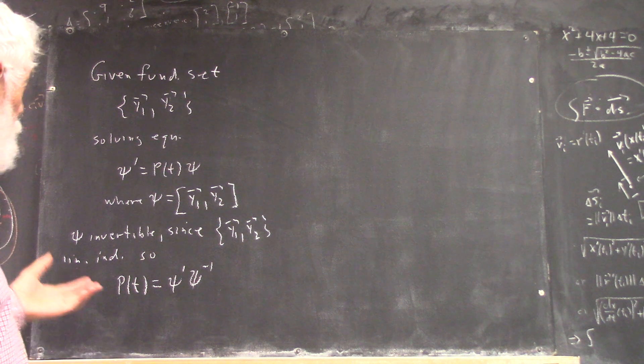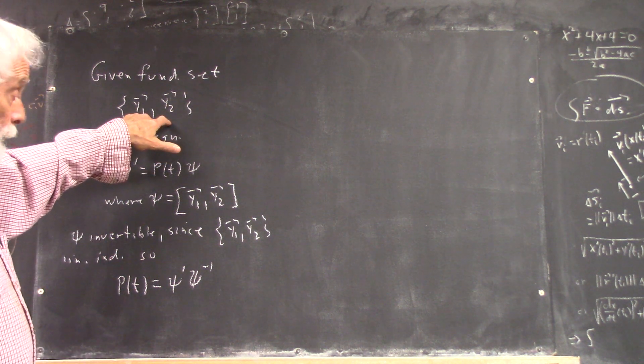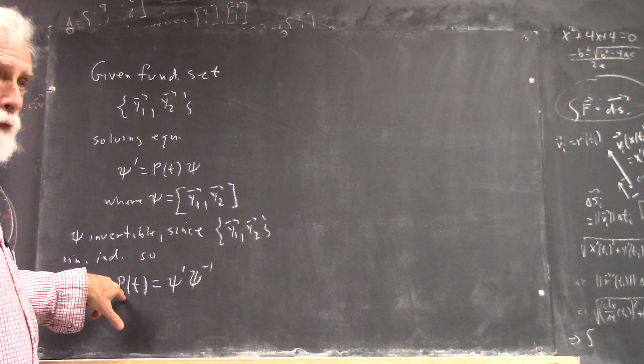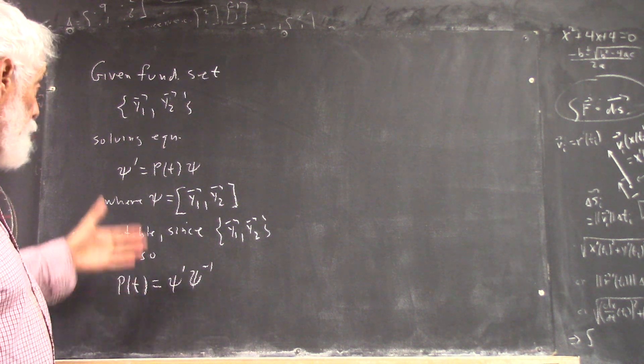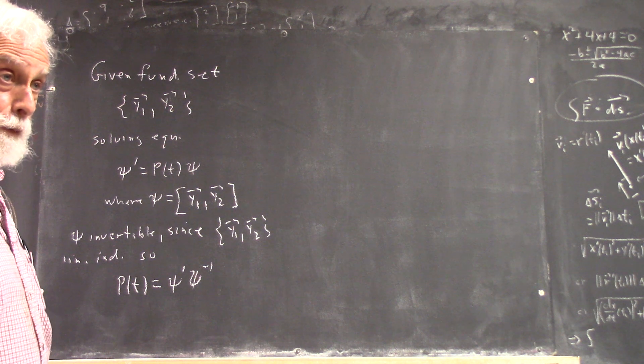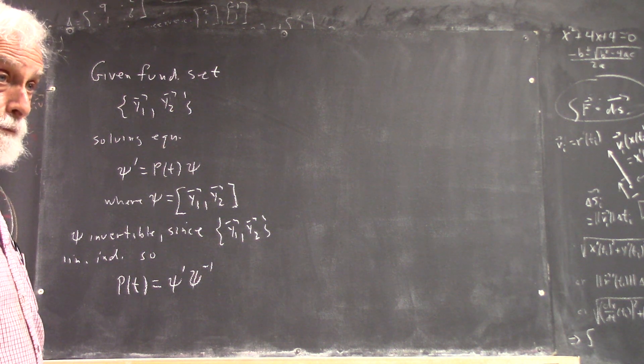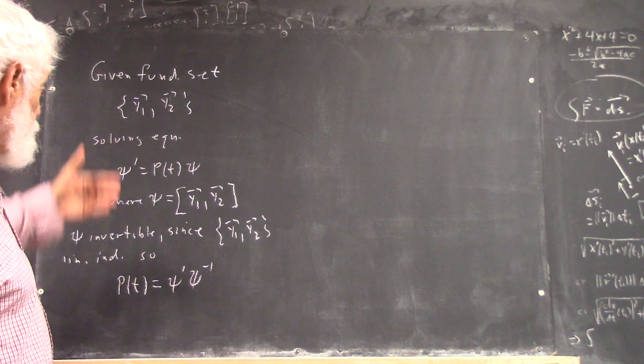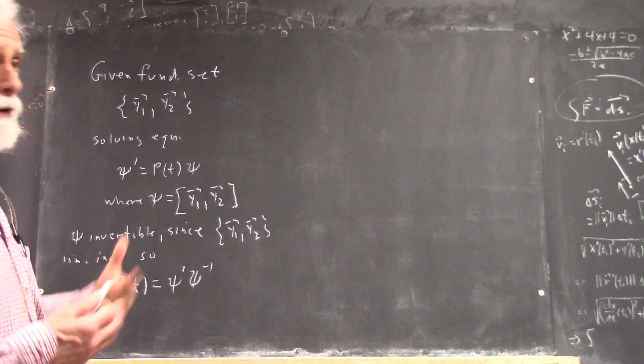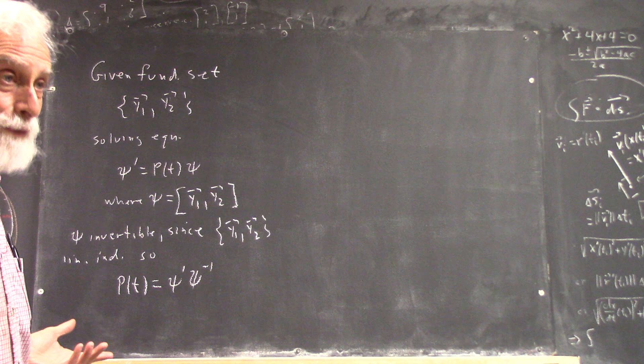So if you're given a problem where you've got the fundamental set and want to find a differential equation, which is equivalent to finding your P(T) matrix, or in this case it would be a system of differential equations, then that's all you've got to do. But you need to understand that. You need to be able to reason that out or you'll never remember it.